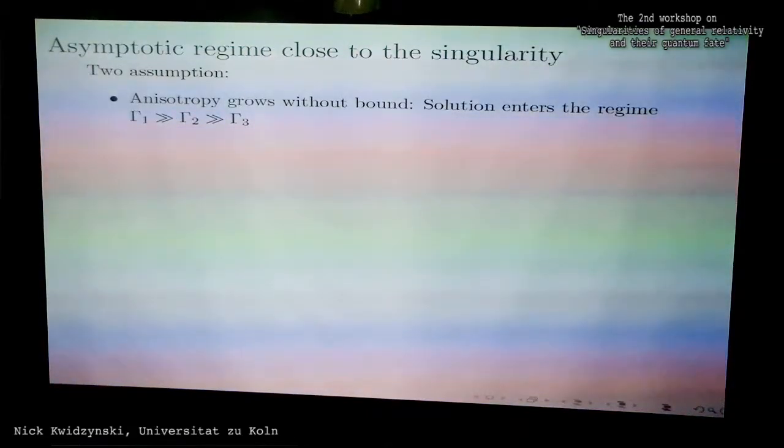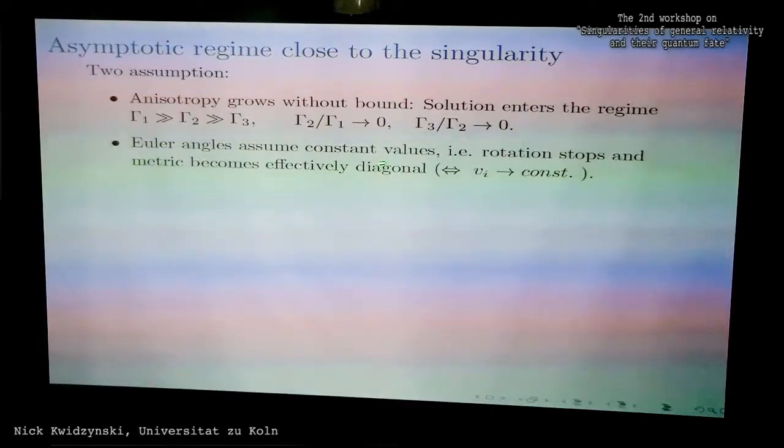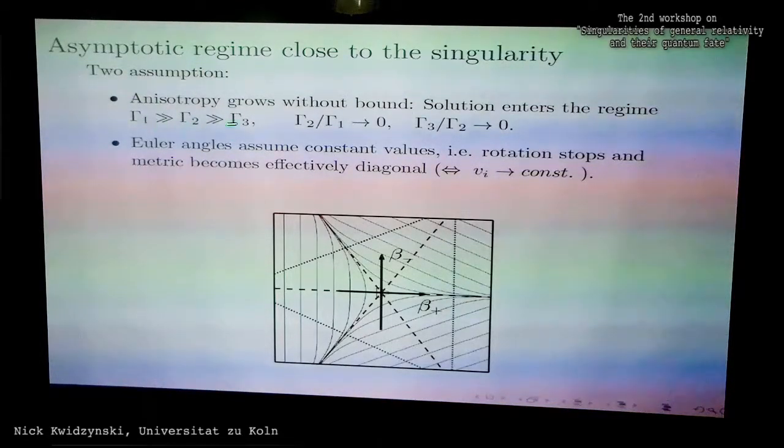Let me now turn to a discussion of the asymptotic regime close to the singularity. BKL started this approximation with making two assumptions. One assumption states that anisotropy grows without bound, and in formulas this means that the solution enters the regime in which gamma 1 is much much bigger than gamma 2, which is much much bigger than gamma 3. The ordering of indices is irrelevant here. This basically means that the ratios gamma 2 over gamma 1 go to zero and gamma 3 over gamma 2 go to zero. Another assumption is that the Euler angles assume constant values, which means that rotation stops for all practical purposes and the metric becomes effectively diagonal. In our case, this means that the dust velocities assume constant values here.